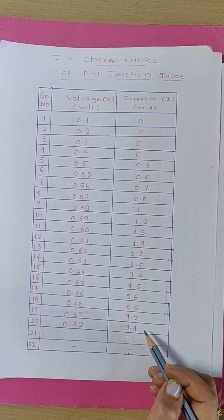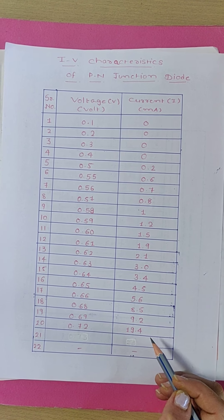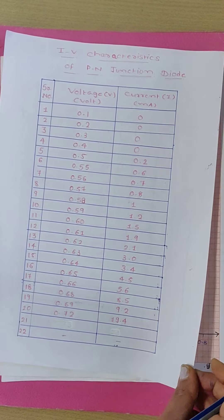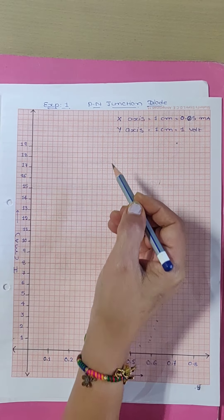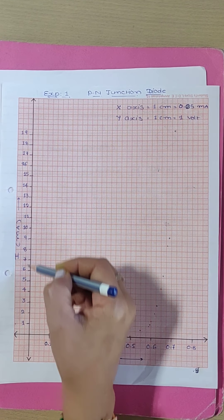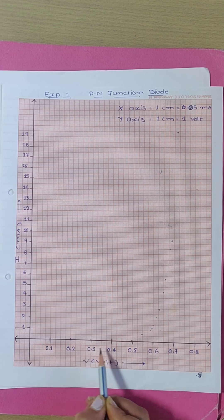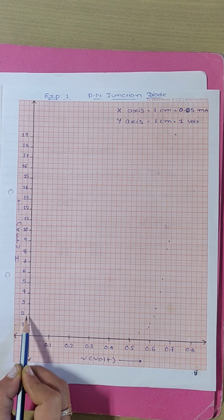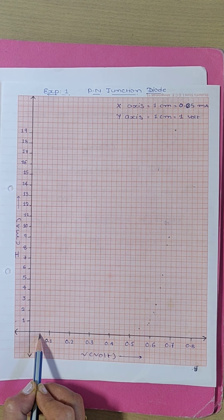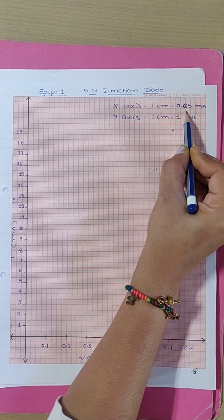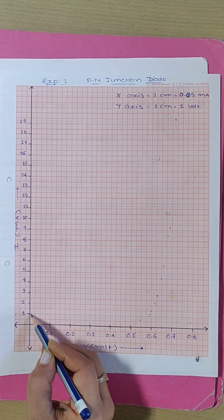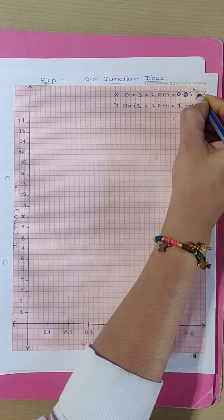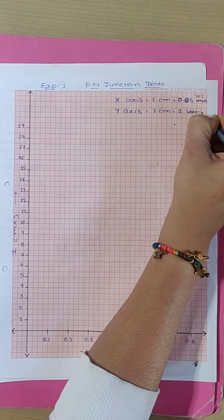To find out static and dynamic resistance and the cut-in voltage of the P-N junction diode, we have to draw a graph. For the IV characteristics graph, I have considered current on the y-axis and voltage on the x-axis. The scale for the x-axis is 1 centimeter equal to 0.05 volt, and for the y-axis 1 centimeter is equal to 1 milliampere.